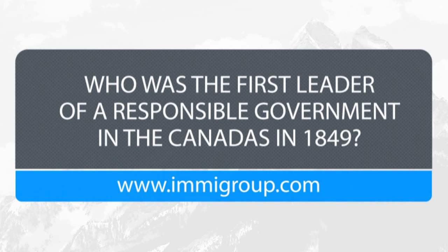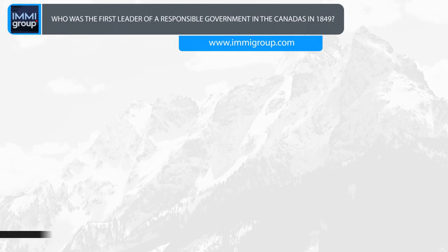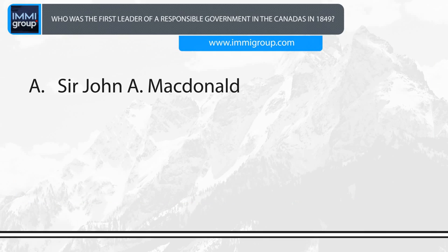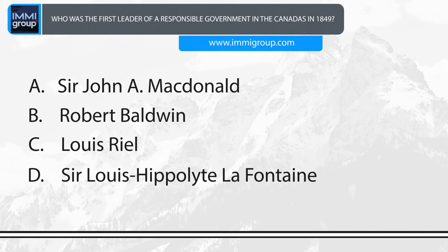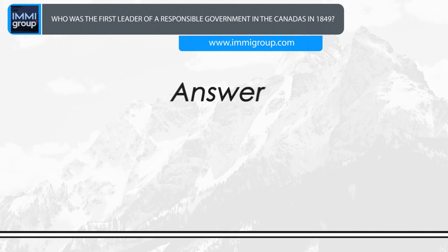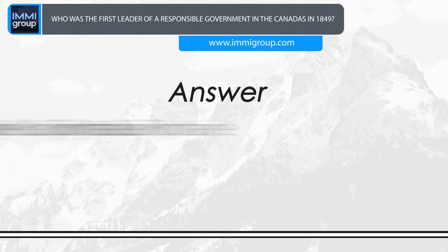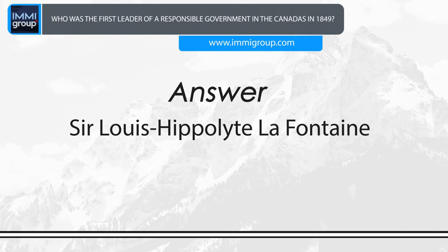Who was the first leader of a responsible government in the Canadas in 1849? A. Sir John A. Macdonald. B. Robert Baldwin. C. Louis Riel. D. Sir Louis Hippolyte Lafontaine. Answer: Sir Louis Hippolyte Lafontaine.